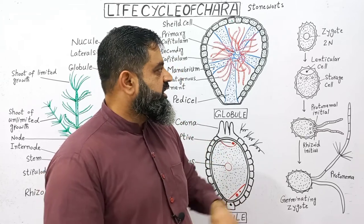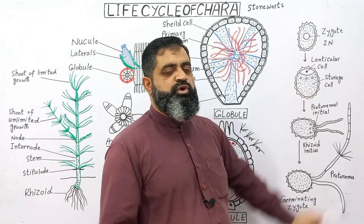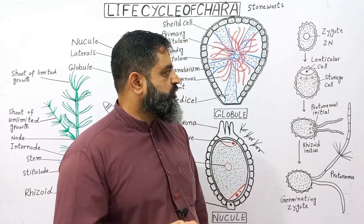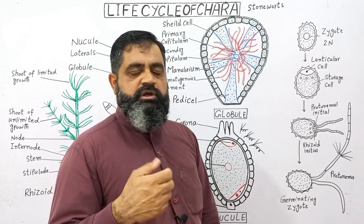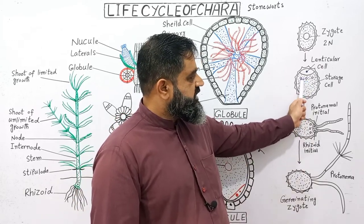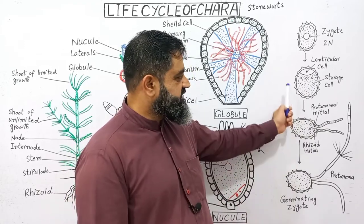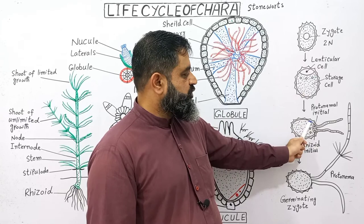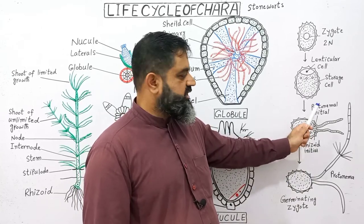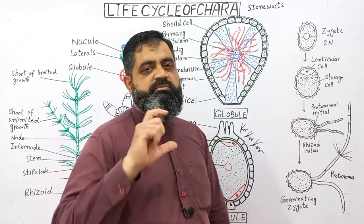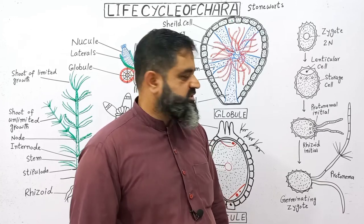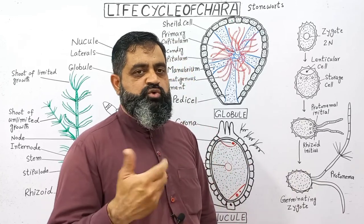First, the nucleus of the zygospore divides into four cells. Three of the cells degenerate while the remaining one is known as the lenticular cell. The lenticular cell will multiply and develop into shoot and root-like structures. Just below the lenticular cell there is a storage cell where food is stored for the developing embryo. The lenticular cell then divides into two cells: one is the protonemal initial and the other is the rhizoid initial. The protonemal initial develops into a protonema-like alga structure which develops into shoots, while the rhizoid initial develops into rhizoids, which are root-like structures.